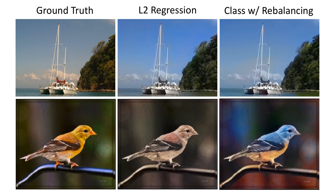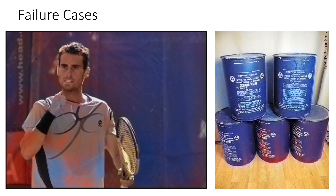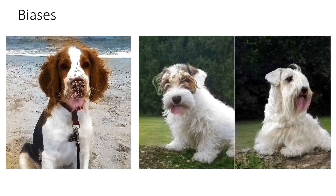The problem is most definitely not solved, and there are failure cases we have observed. One common failure case is that man-made objects can be one of many different colors, and our network at times has difficulty choosing one, resulting in the output having a tie-dye pattern. There are also curious biases we've found: when the network sees a dog face, it expects the dog to have its mouth open and its tongue out, and even when this doesn't happen, the network goes ahead and hallucinates one anyway.